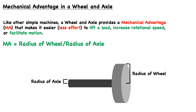Like other simple machines, a wheel and axle provides mechanical advantage, which makes it easier — in other words, it requires less effort — to accomplish the task at hand. This can be lifting a load, increasing rotational speed, or facilitating motion.